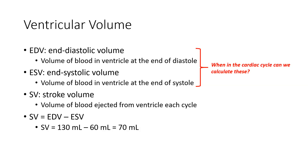From those two volumes, we can deduce stroke volume. Stroke volume is how much blood was actually ejected. If I take how much was left at the end of diastole — how much filled into the chamber to begin with — and subtract how much was left at the end of systole, I can deduce how much was actually ejected. End diastolic minus end systolic gives stroke volume: about 130 milliliters minus 60 milliliters, giving us about 70 milliliters ejected to our systemic organs.